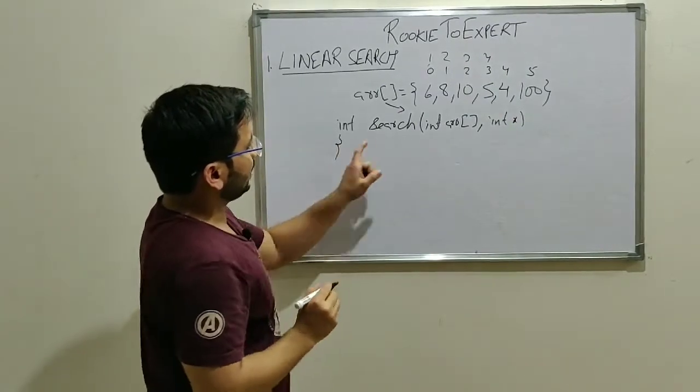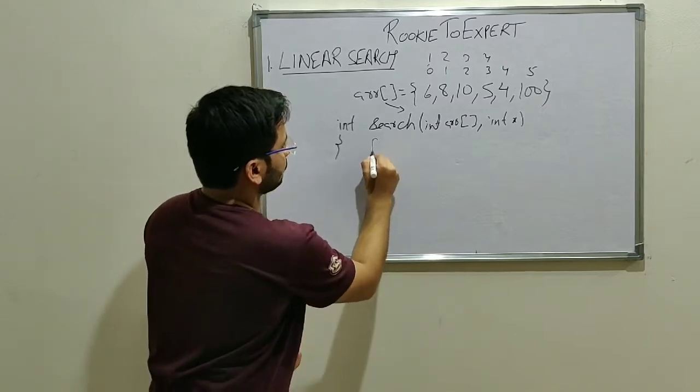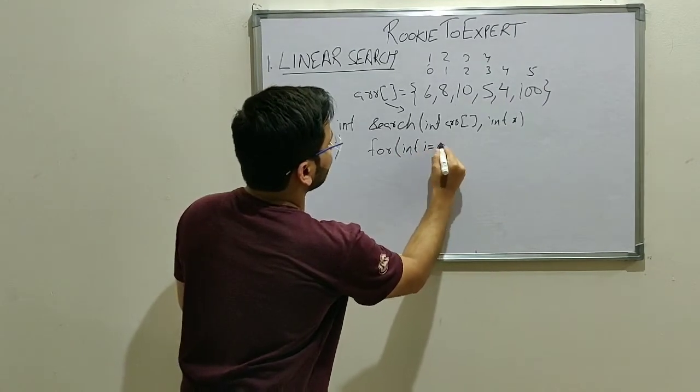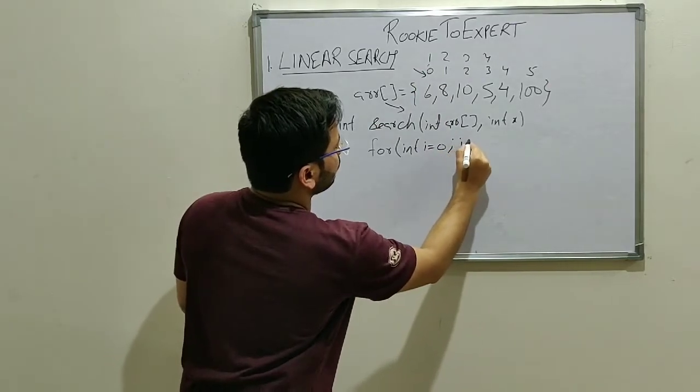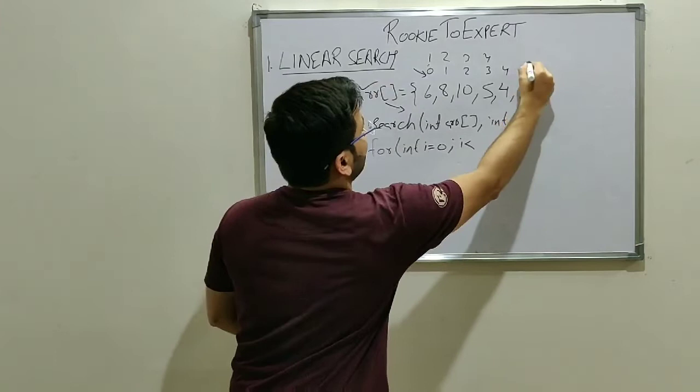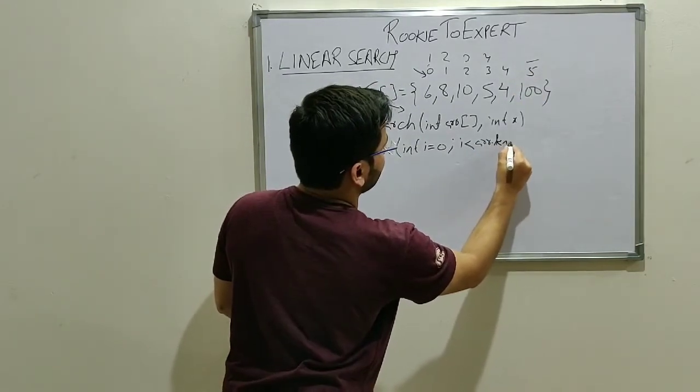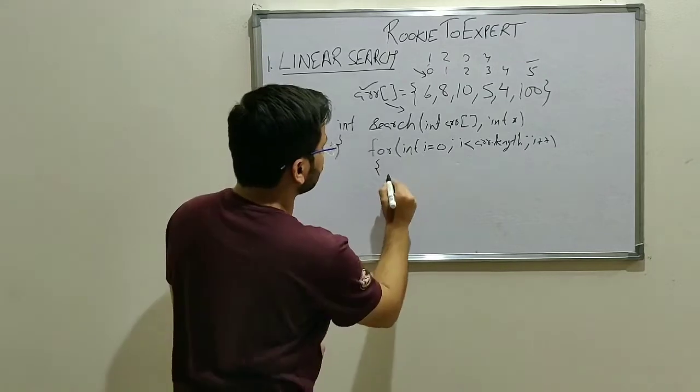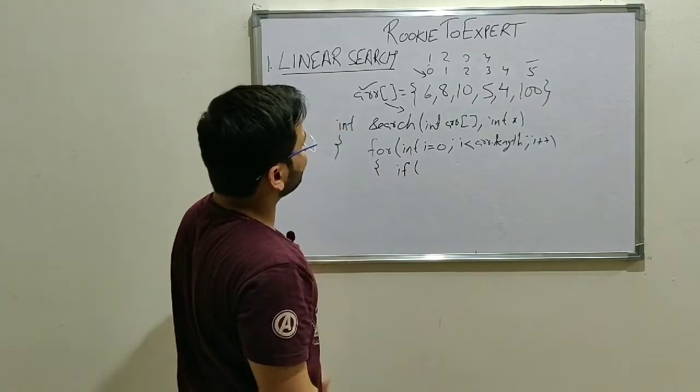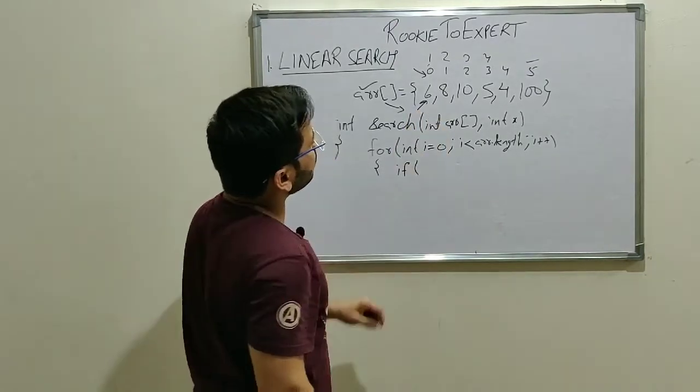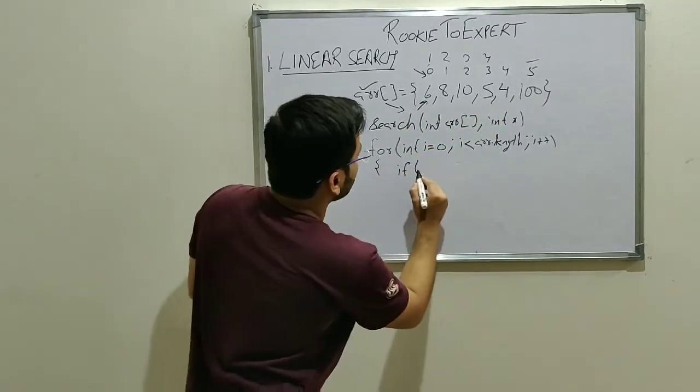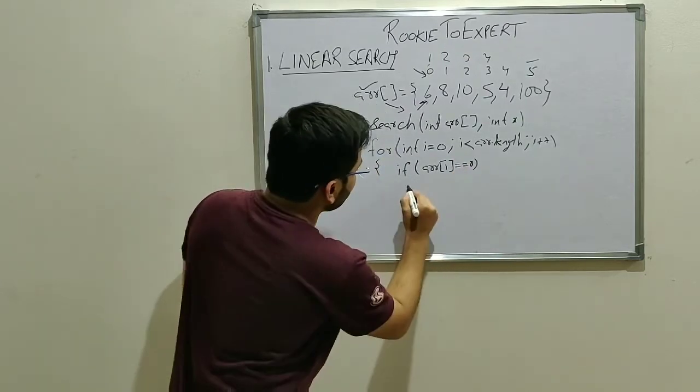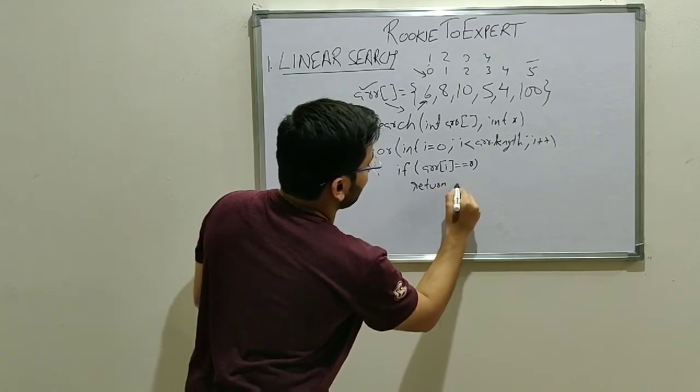So inside this method, what we are going to do, we will take a for loop. So this for loop will have an iterator, let's call it i, which will start from the 0th index. And it will go till the end of the array. That is array.length. And we will increment it by one each time. So inside for loop, we will take an if condition. Inside if we will check if the current element that we are looking for is equal to the element to be searched. So if array i equals equals x, simply we are going to return the index i, correct?